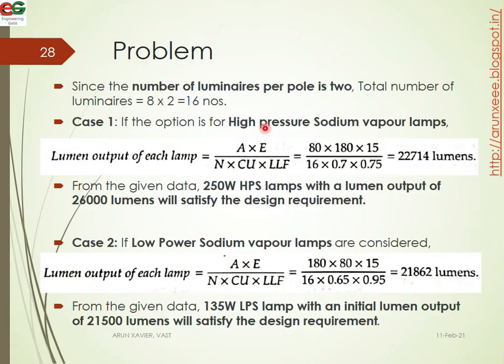The lamp output of each luminaire is calculated using the formula: A times E divided by N times CU. Using area 180 times 80 and illuminance value of 15, with 16 lamps, the required lumen output per lamp works out to approximately 22,714 lumens.